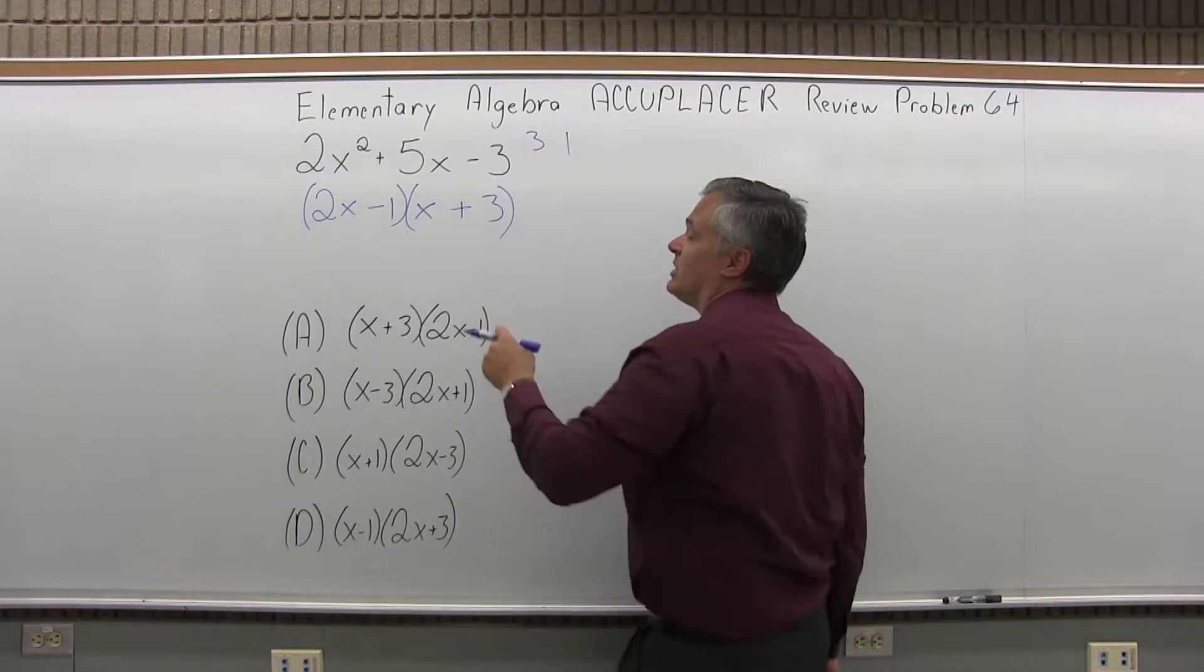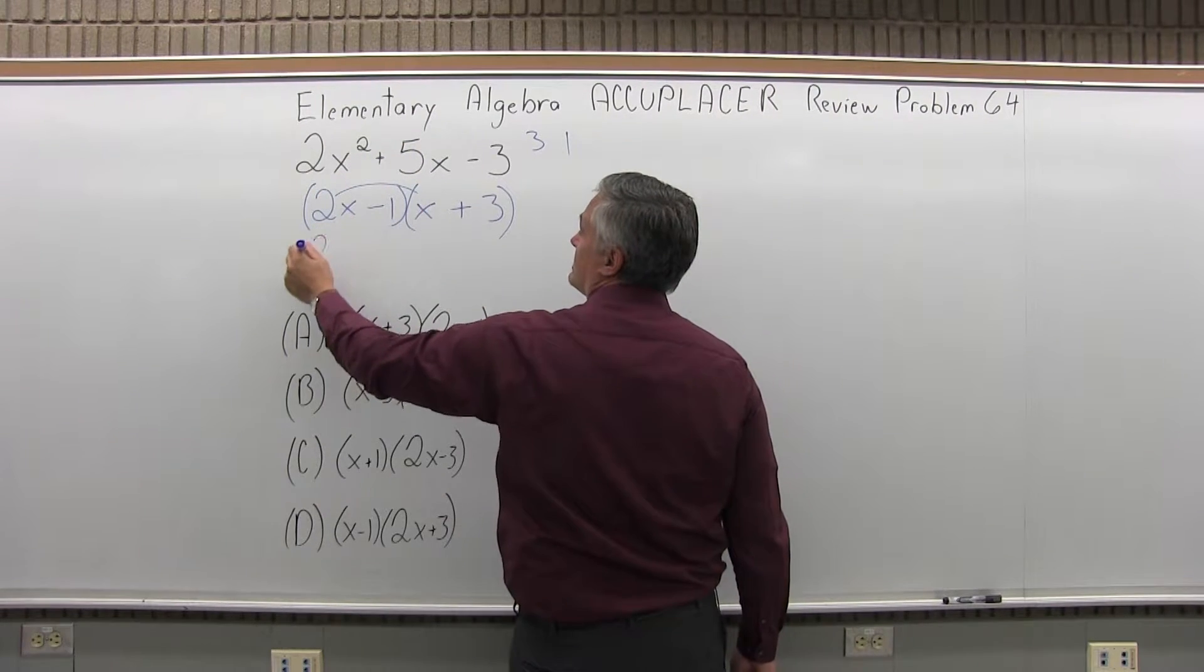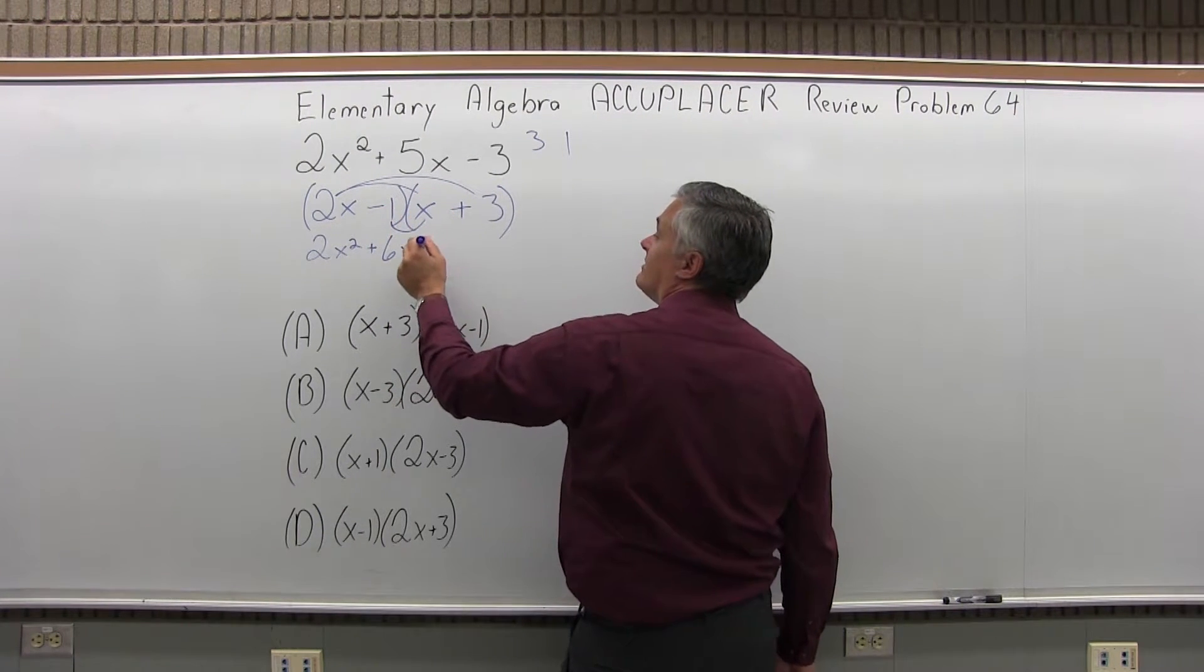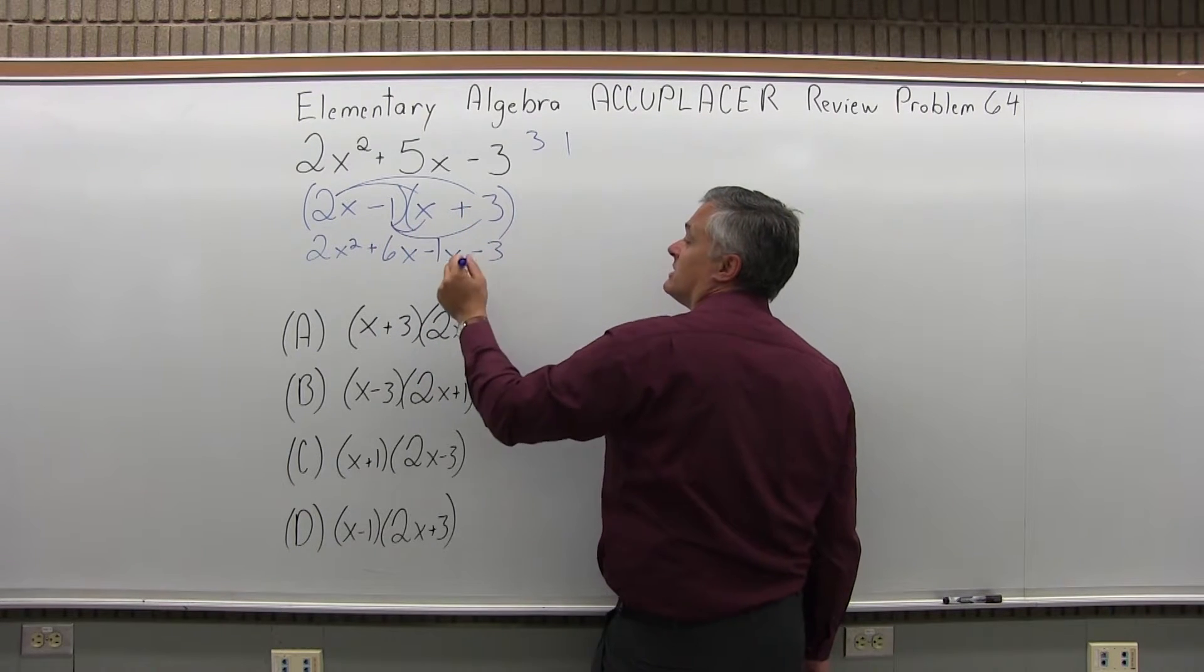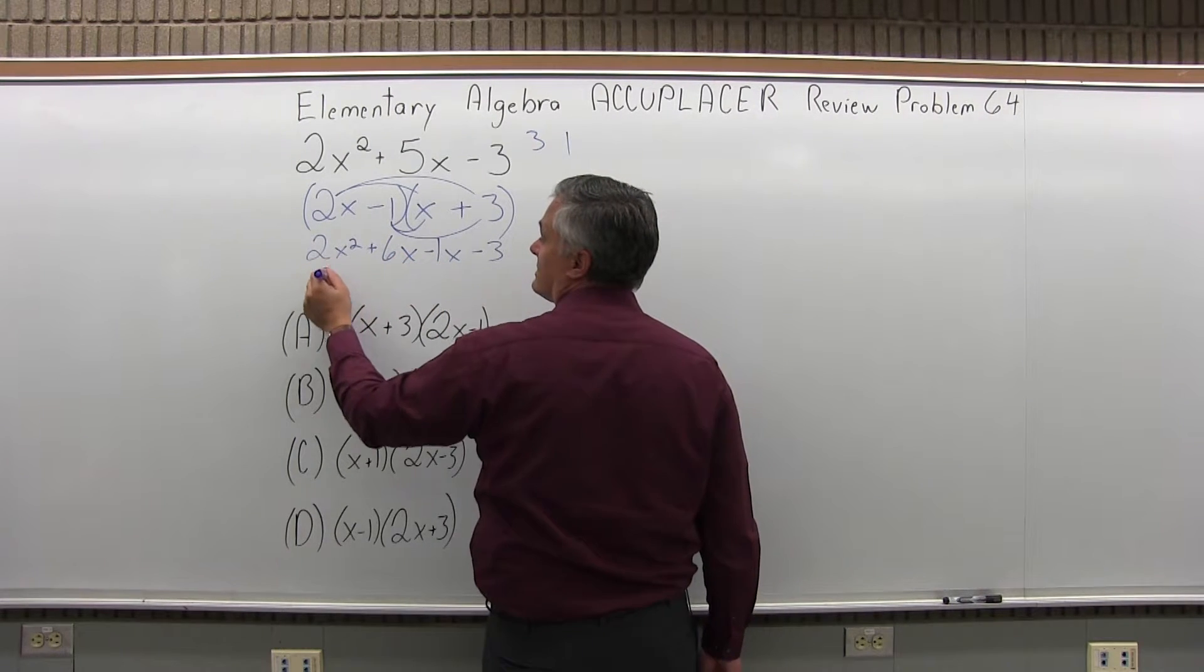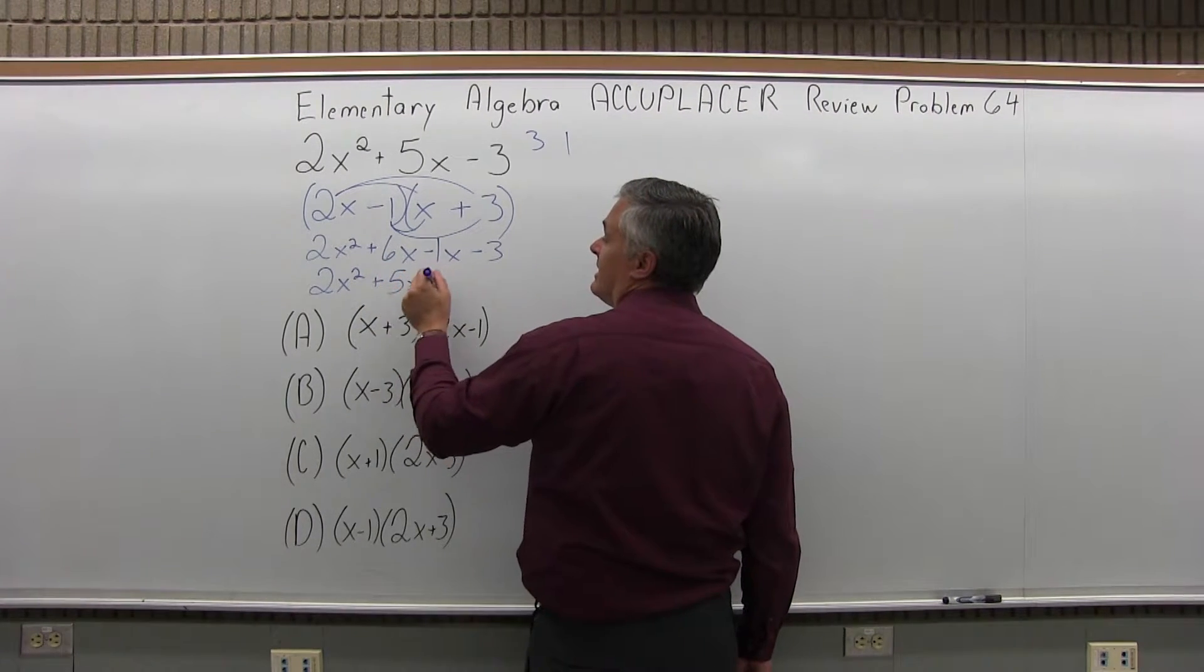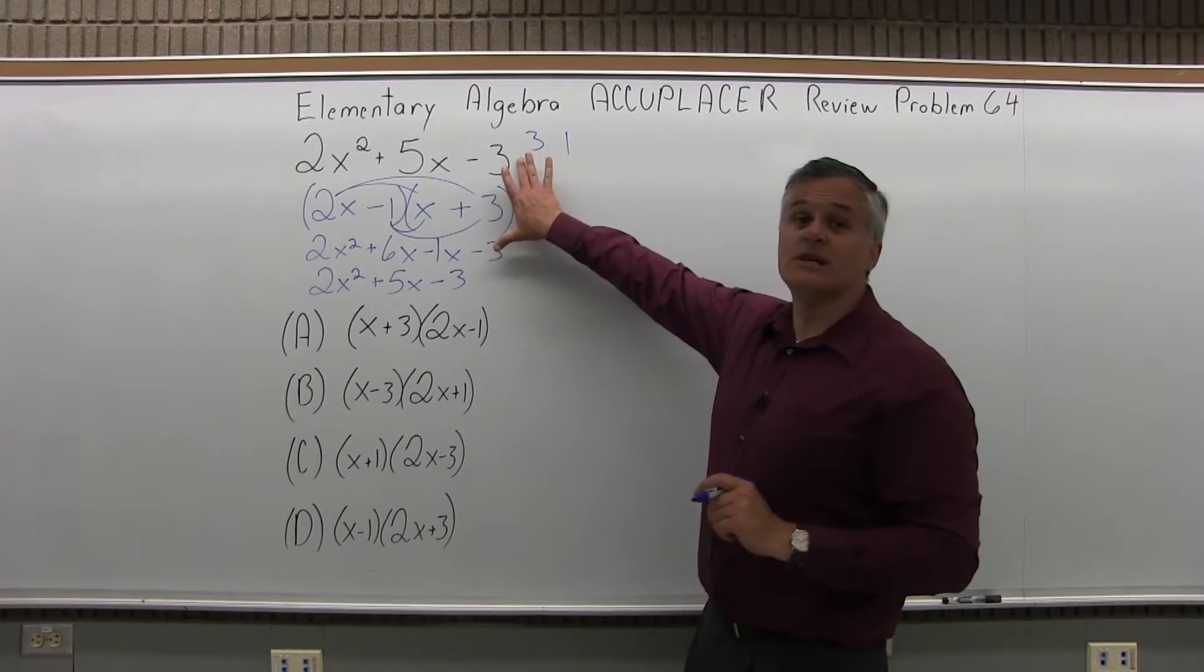Let's multiply it out to verify that it does equal this. So 2x times x is 2x squared, 2x times positive 3 is plus 6x. Negative 1 times x is negative 1x, and negative 1 times positive 3 is minus 3. I'll combine my middle pieces of 6x and negative 1x. The 2x squared in front will stay in front. Positive 6x, negative 1x combined for positive 5x, and the minus 3 on the end will stay on the end. And sure enough, it does match.